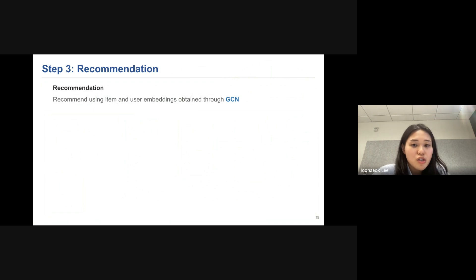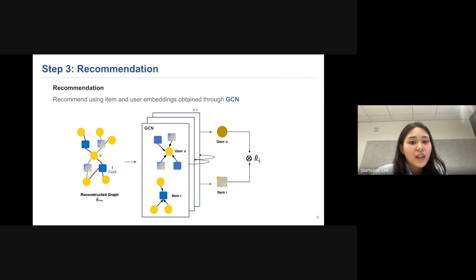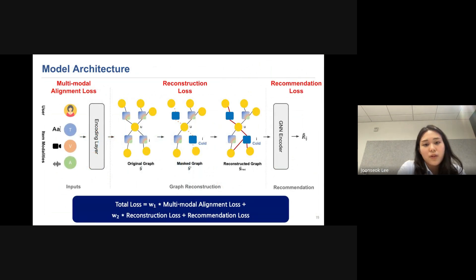And lastly, we perform recommendation using item and user embedding obtained through the GNN encoder. By using reconstructed graph G-rec, this will go into the GCN layer again to produce user and item embedding. And the reason why we use GCN layer again is that we want the cold item information to be flowed to the neighbor embedding and vice versa to enhance the recommendation performance. And in this part, we use recommendation loss, which is contrastive loss to maximize the dot product between the same pair and minimize for different pairs. So to sum up the loss in our architecture, we have three parts and each loss is produced in each part. Then total loss is summing up all the losses with weight.